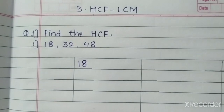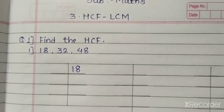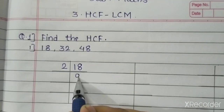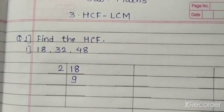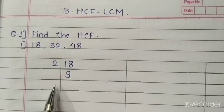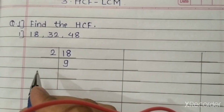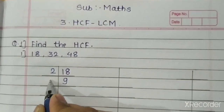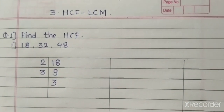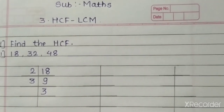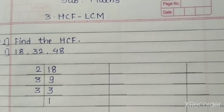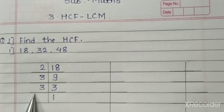Write the number 18. Then 18 can be divisible by the number 2. Two nines are 18. Write here the number 2 and the quotient 9. After that, this number 9 cannot be divisible by 2, so take the next prime number, that is 3. Then 3 threes are 9. Write here 3, and once again 3 is divisible by 3. Three ones are 3. Write the number 3 and the quotient will be 1. These are the prime factors of 18.